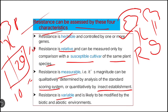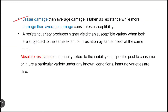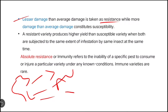Fourth, resistance is variable and is likely to be modified by biotic and abiotic factors. Environmental factors — biotic and abiotic — will affect the resistance, making it variable depending on conditions. Lesser damage than average damage is taken as resistance, while more damage than average damage constitutes susceptibility.